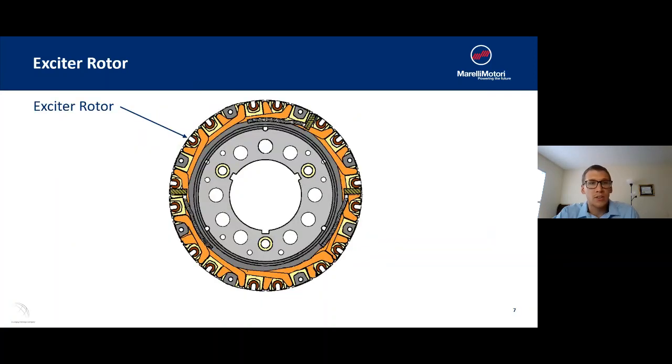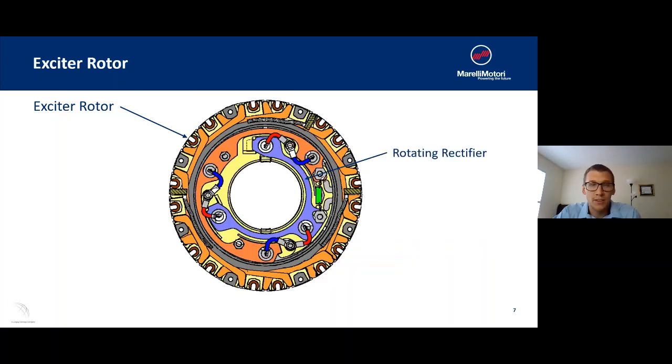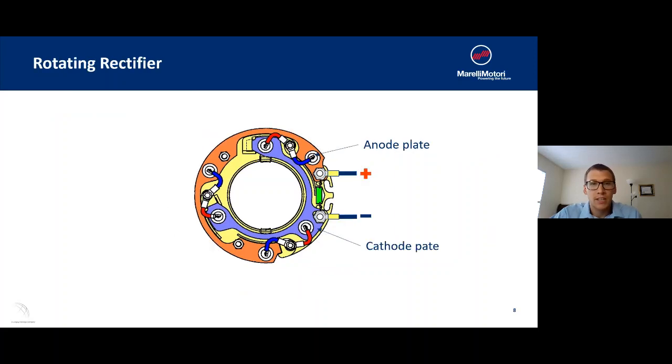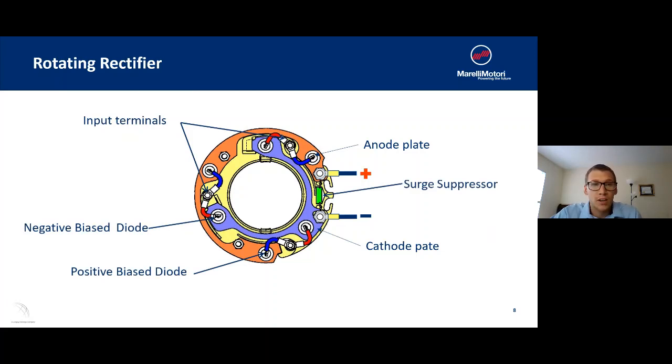If we look at the exciter rotor, inside of the exciter rotor, we're going to find the rotating rectifier assembly. The rotating rectifier assembly is composed of just a few parts, the anode plate and the cathode plate. On these plates, you're going to find negatively or positively biased diodes. These diodes are going to take either the top or the bottom half of the AC sine wave depending on which way they're oriented. The three-phase current is put into the input terminals and then it's pushed through these diodes into the out.